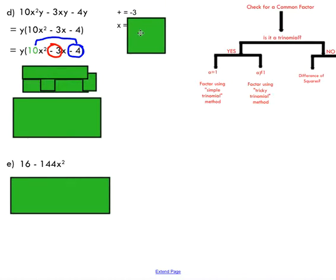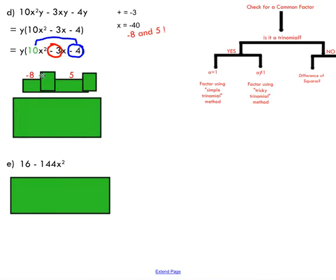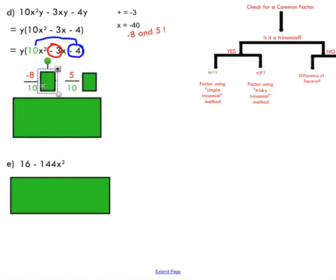Remember the main difference between simple and tricky trinomial factoring: you find two numbers that add to get your b term while multiplying to get your c term times your a term. We need to add to get negative 3 and multiply to get negative 40. Always start with factors of 40 — I'll try negative 8 and 5, and you can see those numbers also add to get negative 3. This process takes some practice, so if you don't get it right away, just do a couple of examples to build up the skill.